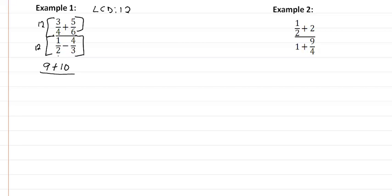12 divided by 2 is 6, and 6 times 1 is 6. 12 divided by 3 is 4, and 4 times 4 is 16. So what we have now is 19 over negative 10, and it's simplified.